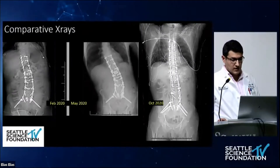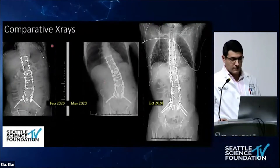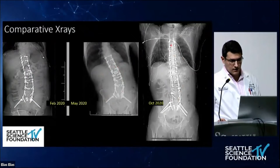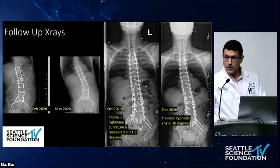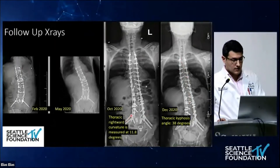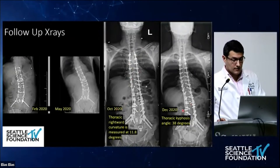We followed up on this patient. These are comparative x-rays: the initial post-op in February, his deteriorating state in May, and his scoliosis x-ray in October. We followed up again in December and noted that the patient was tilting again to the right side. His thoracic curvature was around 12 degrees in October, but unfortunately it increased to around 38 to 40 degrees in December.